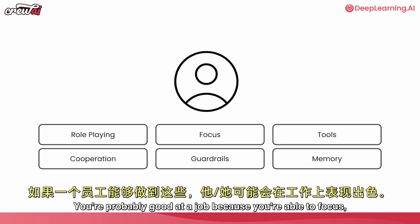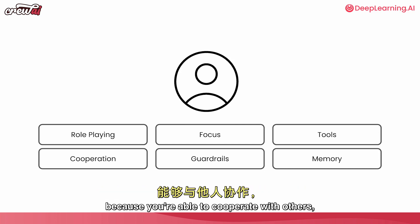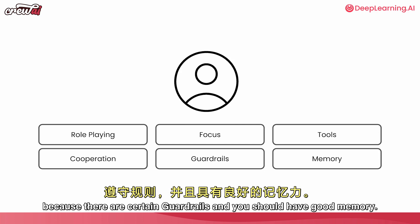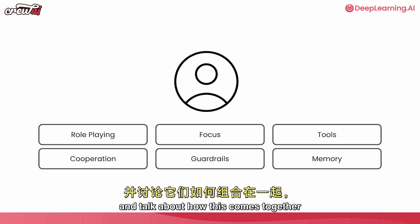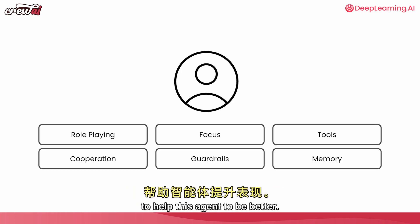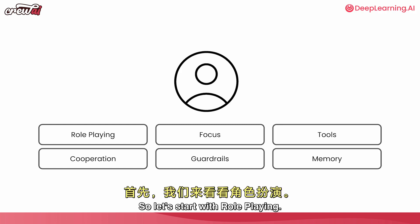A lot of that is what makes good employees as well. You're probably good at a job because you're able to focus, because you're able to use the right tools, because you're able to cooperate with others, because there are certain guardrails, and you should have good memory. Let's dig into each one of those and talk about how they come together to help agents be better.